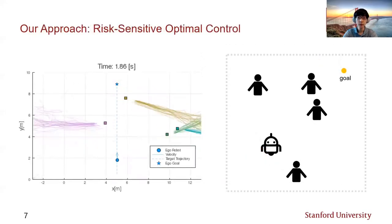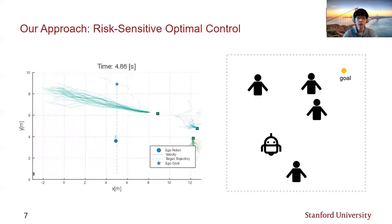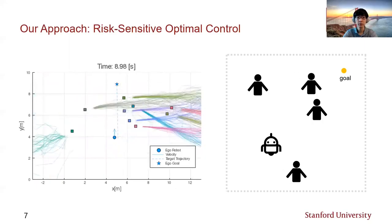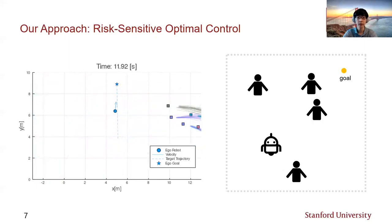To address those challenges, this work proposes a novel online framework for safe crowd-robot interaction via the use of risk-sensitive stochastic optimal control and explicit probabilistic prediction of human motion.